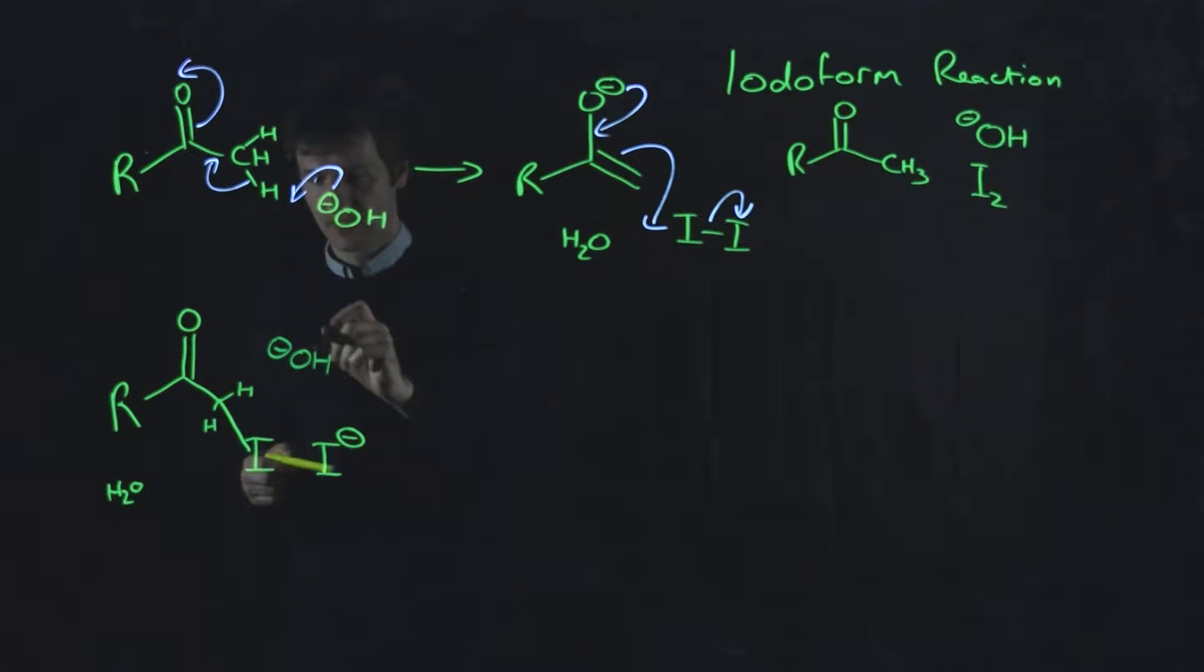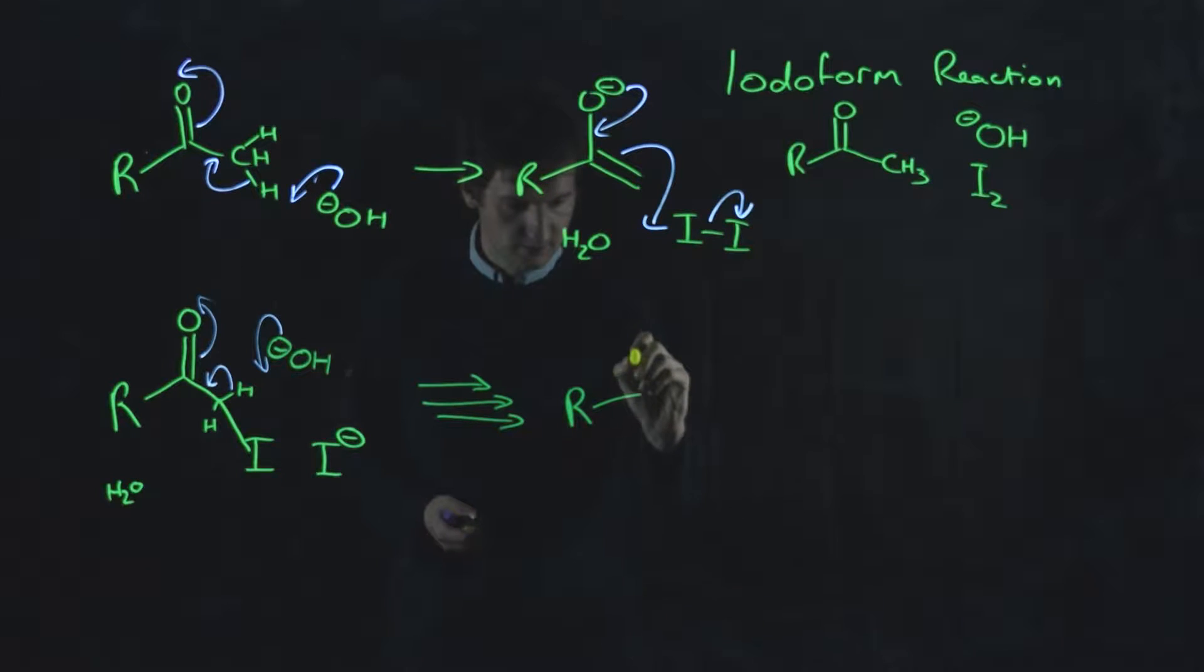Well, exactly the same thing is going to happen again. We're going to form our enolate. And our enolate, which will look like this, except now with an added iodine, will attack another molecule of iodine. And eventually, without drawing out all those steps, what you will end up with is this molecule here.